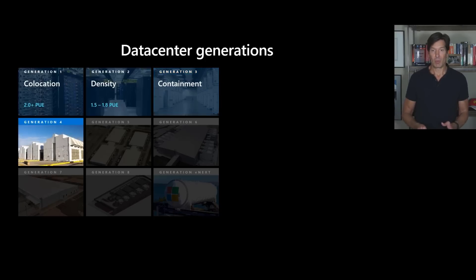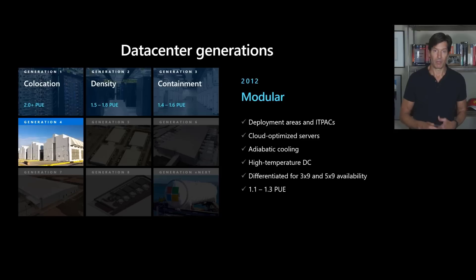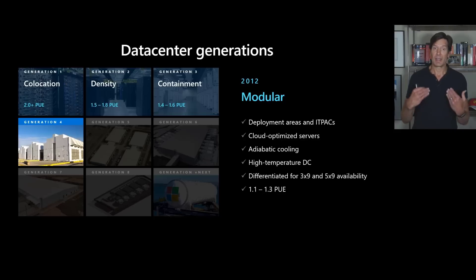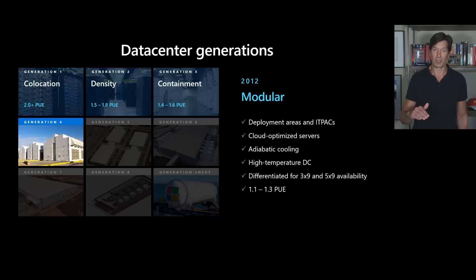In generation four, we moved away from containers — which we found were actually more expensive for long-term maintenance — to an IT pack approach, where we pre-deploy areas on the data center footprint for certain types of servers, with network cabling and everything else pre-configured. We also switched to adiabatic cooling, meaning we use the ambient air temperature around the data center to lower cooling costs, and we could operate servers at a higher temperature. This allowed us to get PUEs down to between 1.1 and 1.3.